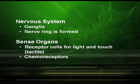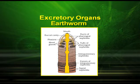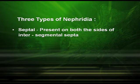The nervous system is made up of the ganglia and the nerve ring. Regarding sense organs, they have receptor cells for light and touch, and they also have chemoreceptors. The excretory organs of earthworm include the segmentally arranged coiled tubular organ called the nephridia, and there are three types of nephridia.